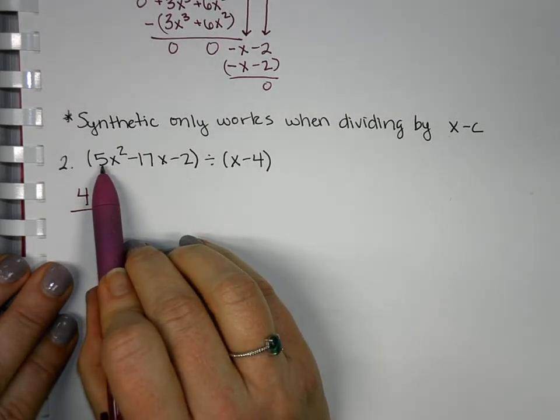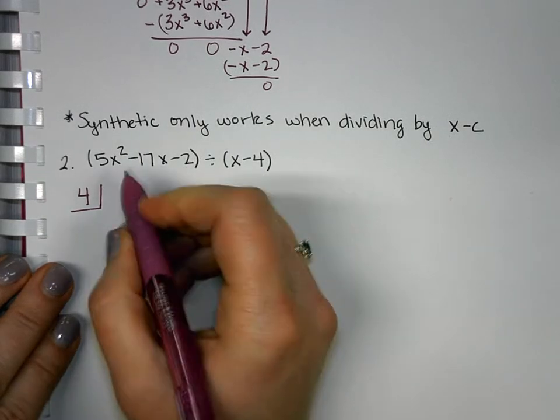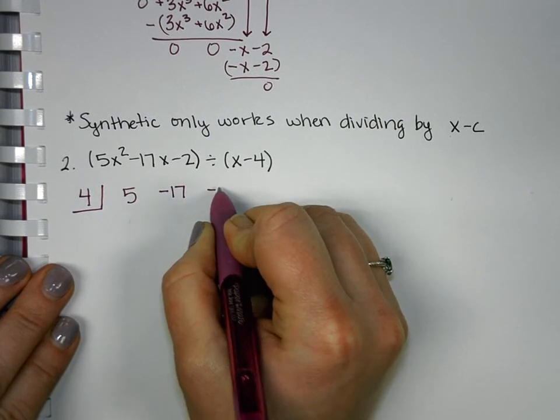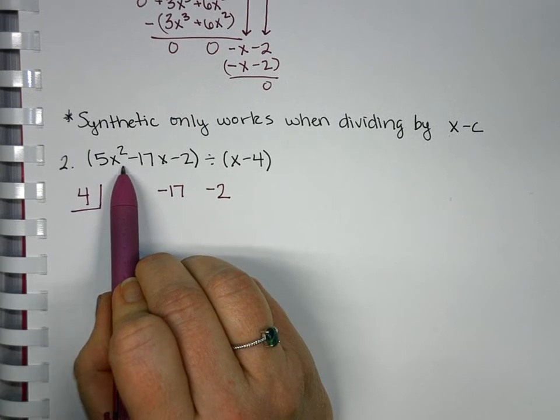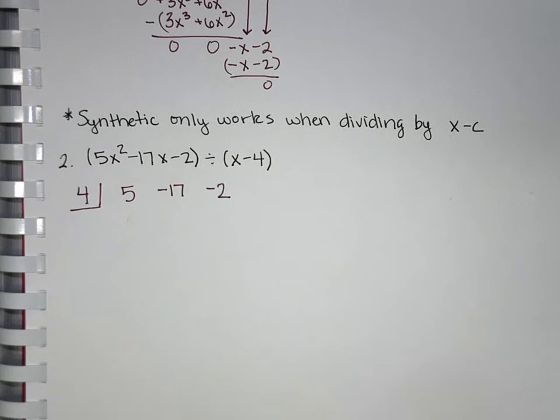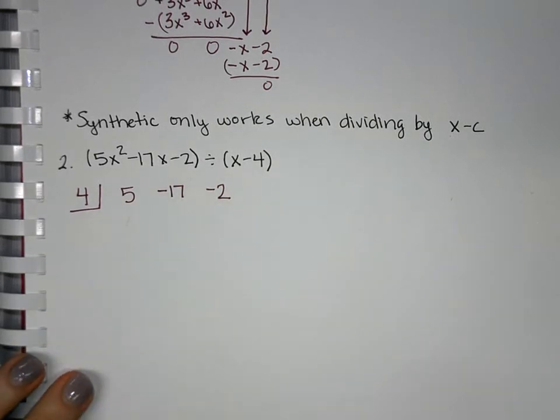Next to it, I'm going to write just the coefficients of my polynomial. So, I had a 5x squared, a negative 17x, and a negative 2. If ever you're missing one, so, like, let's say there wasn't an x value, it was just 5x squared minus 2, you have to put that zero placeholder in for every coefficient, whether the variable to that power is a part of it or not, to make sure every place value is hit. And we're actually, the one we do in class tomorrow, we're going to have to insert some placeholders. So, we've got our synthetic division set up.